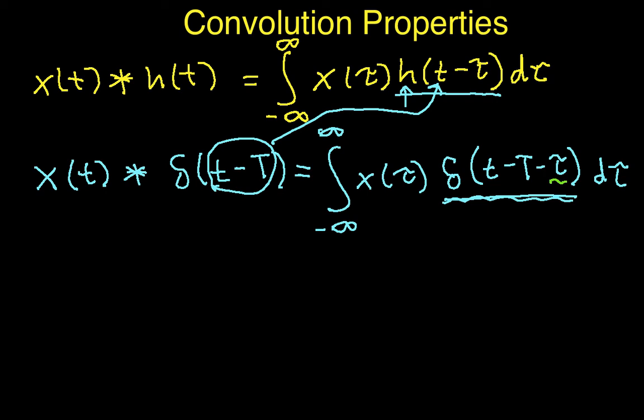whenever tau is anything except for t minus cap T. So, anytime tau is different than t minus cap T, the delta function is zero, and the product of x of tau and the delta function is also zero.